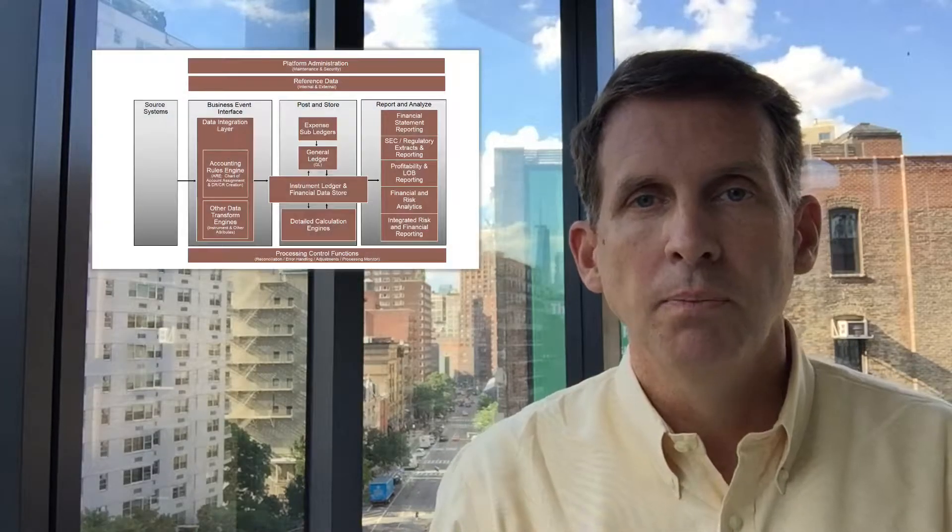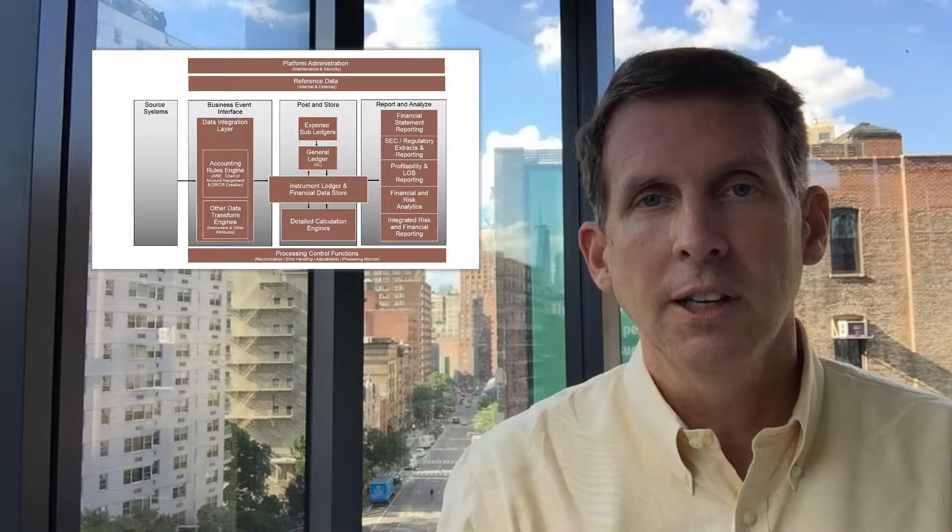At the bottom of the architecture picture, we have additional processing functions — starting with reconciliation. I've noted in my discussions in this video set that reconciliation is something we're trying to eliminate. Even the instrument ledger probably won't eliminate all reconciliation; there will probably still be processes that do posting outside of the instrument ledger for a long time to come. We have to reconcile those balances with the balances in the instrument ledger. As noted when talking about the general ledger, if the general ledger continues to do posting processes within the post-and-store layer in synchronous with the instrument ledger, we have to reconcile the general ledger with the instrument ledger.